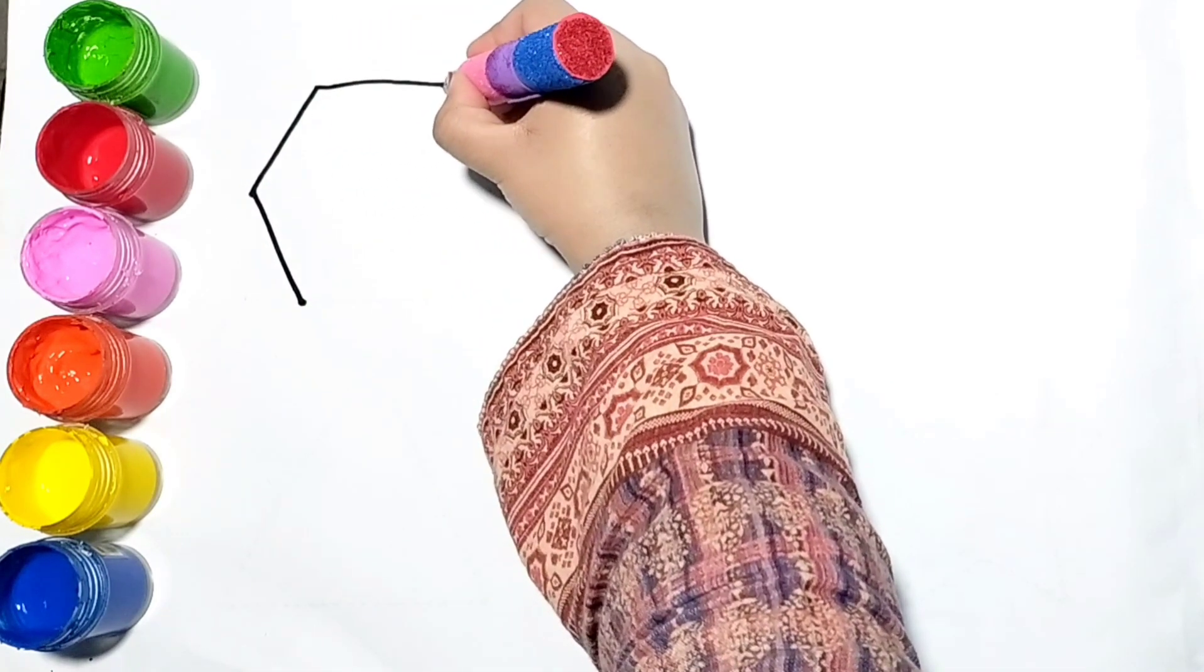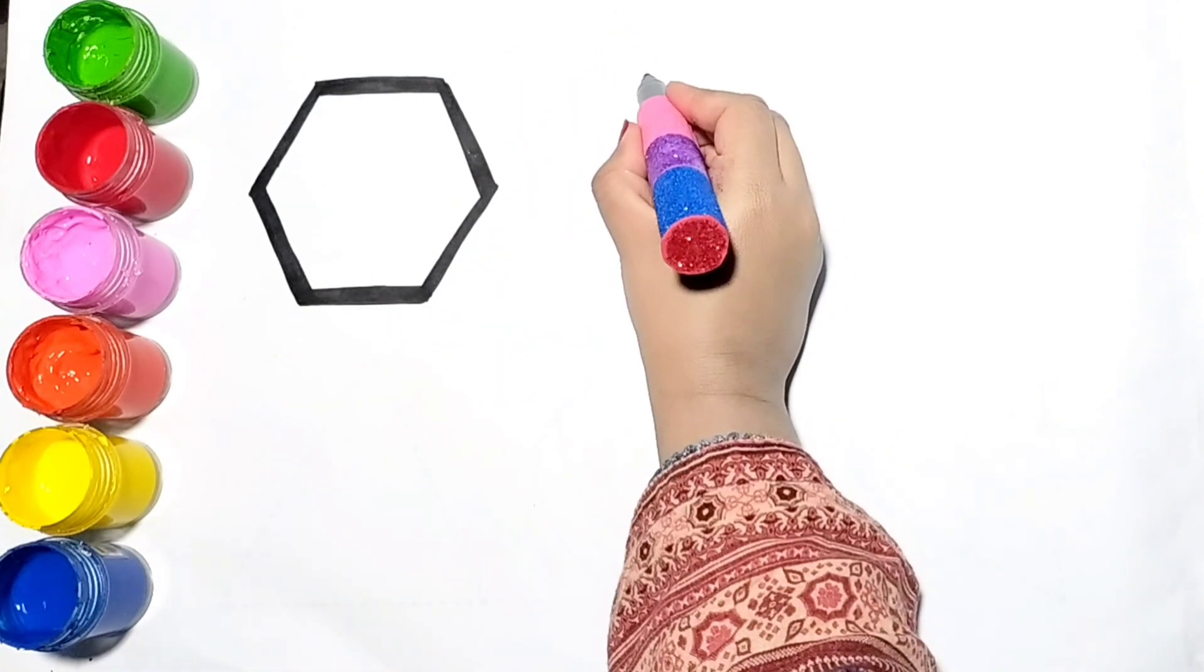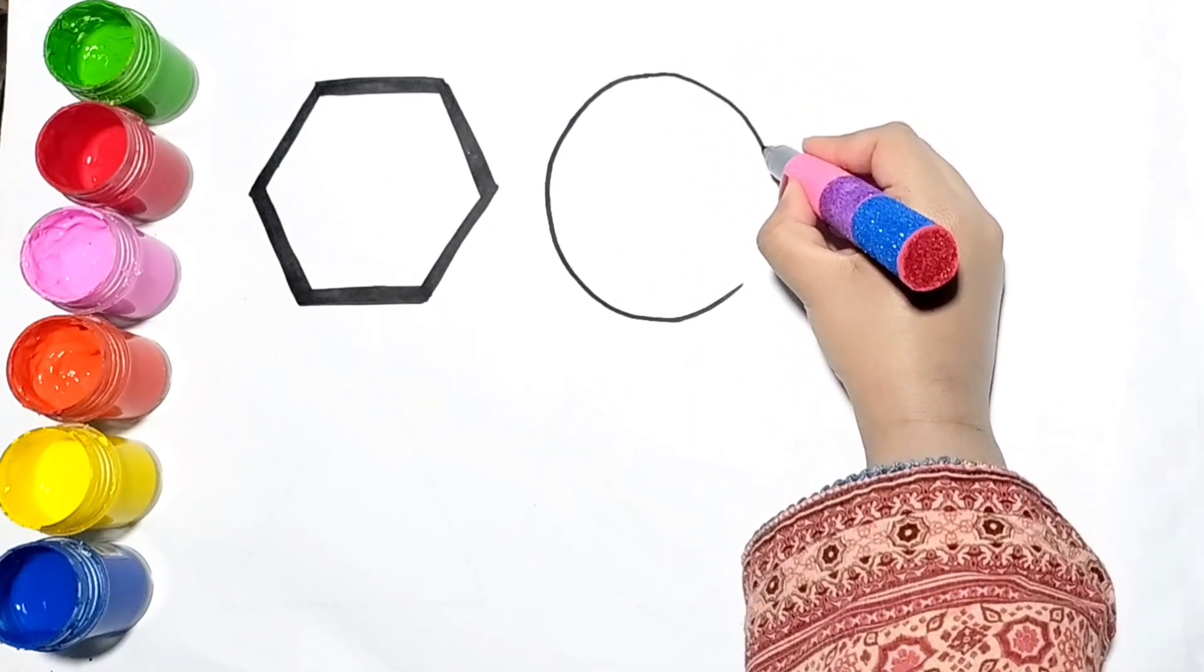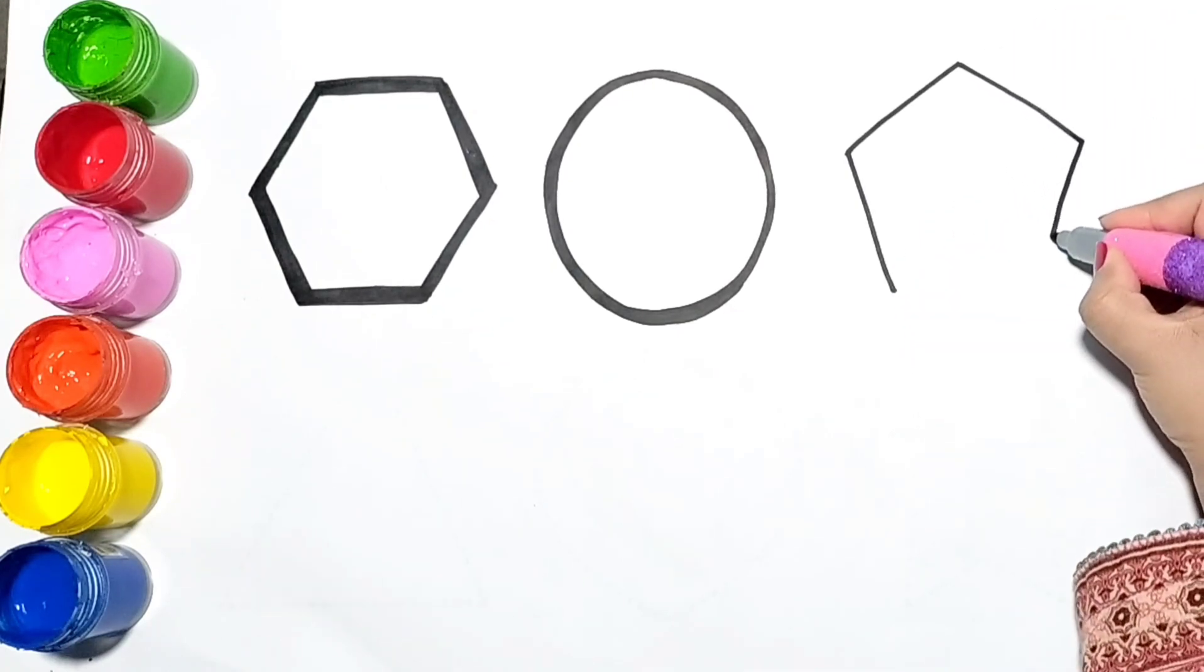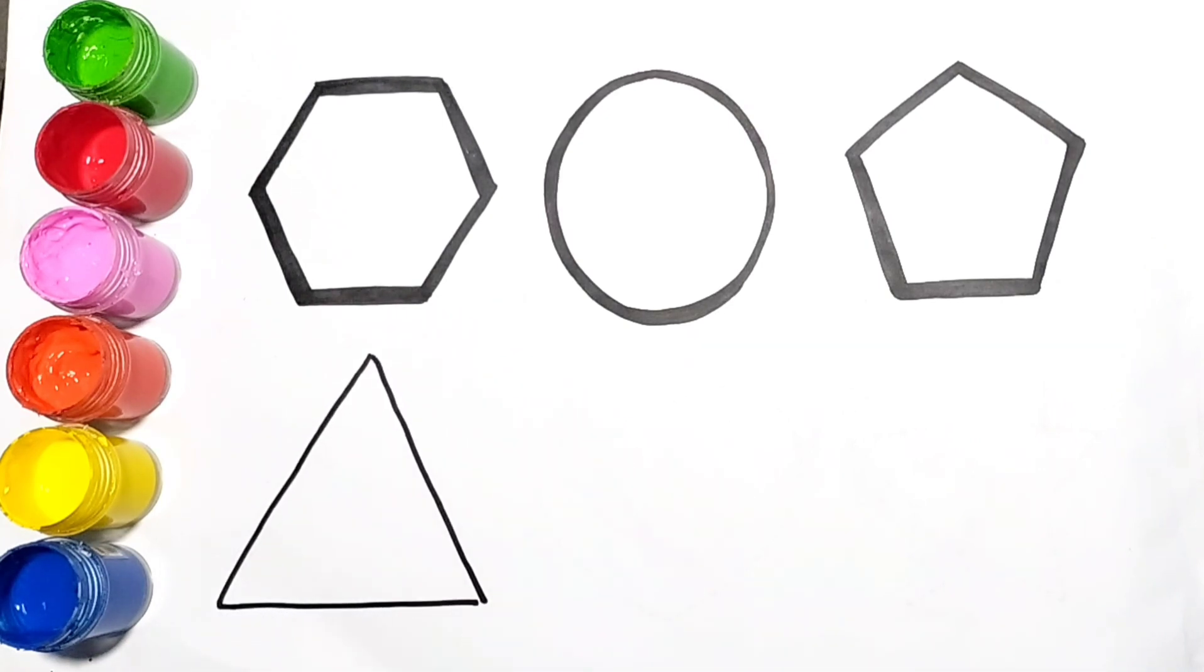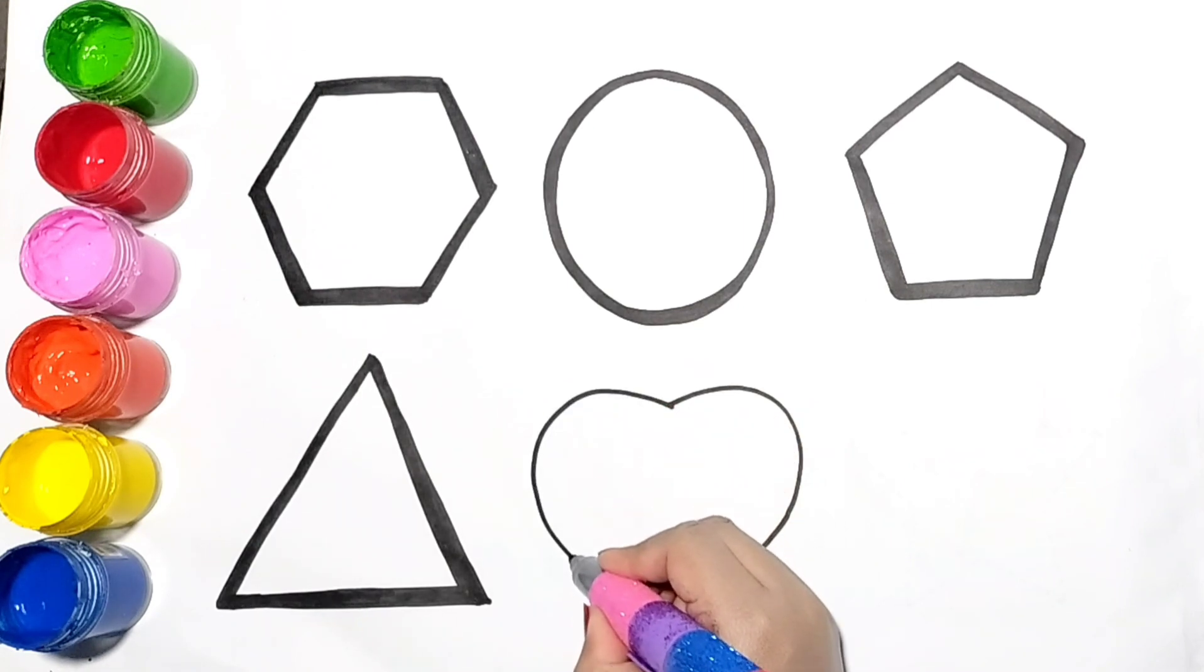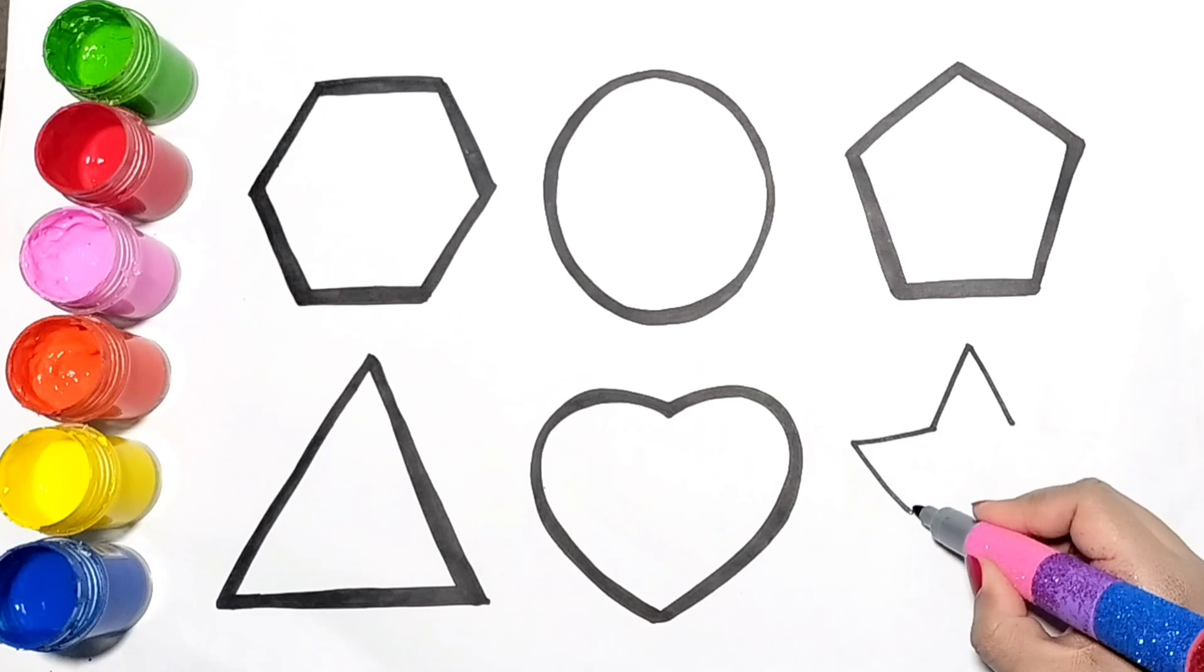This is hexagon. Now I am tracing circle. Let's draw pentagon here. Now I am drawing triangle. Let's draw a heart. It's a lovely heart. And last shape is a star.